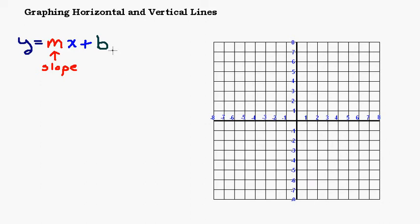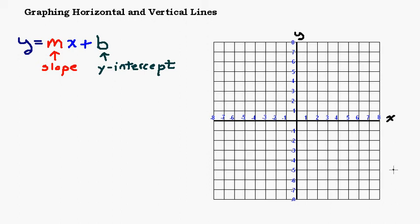And b, if there's a number added at the end or subtracted — you can think of it as adding a negative — that's going to be your y-intercept. So hopefully you remember that slope is defined as rise over run. It tells you basically how steep the line is and what direction it's going. The y-intercept tells you where the graph is intersecting the y-axis, this vertical axis. And there's your x-axis.